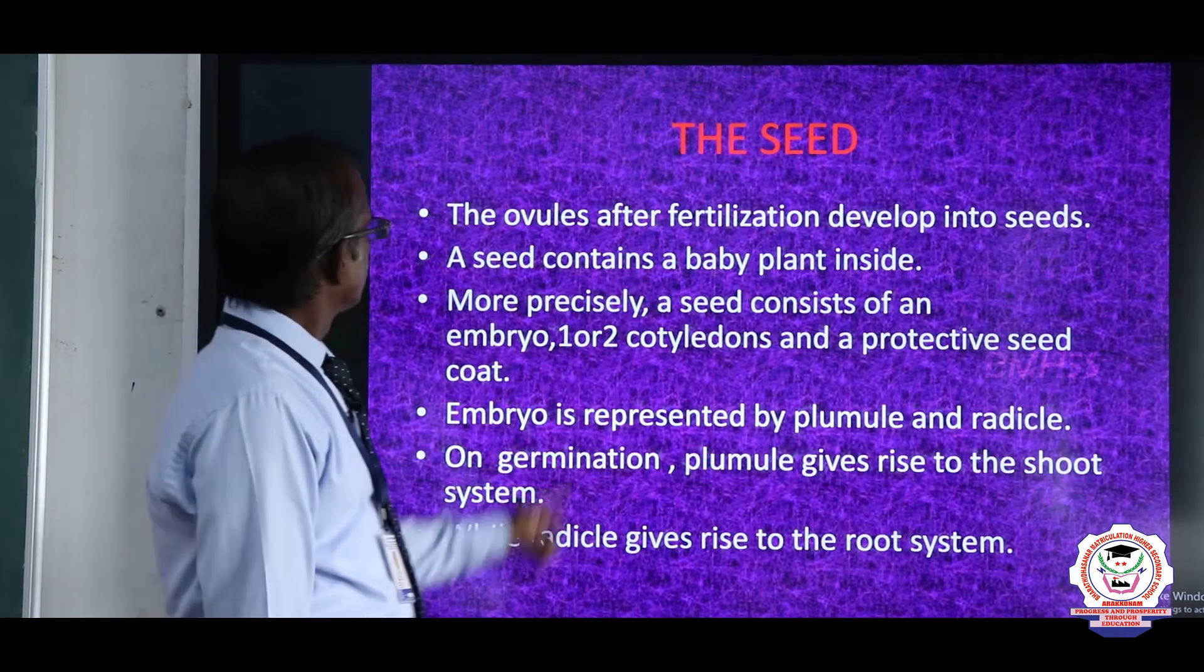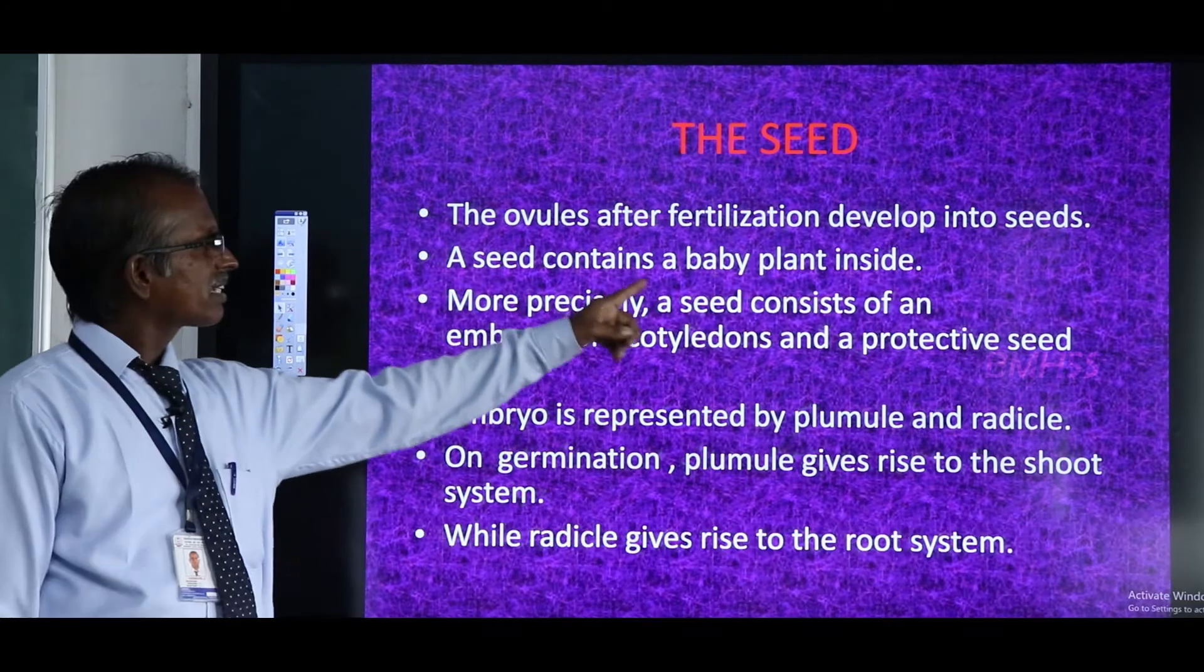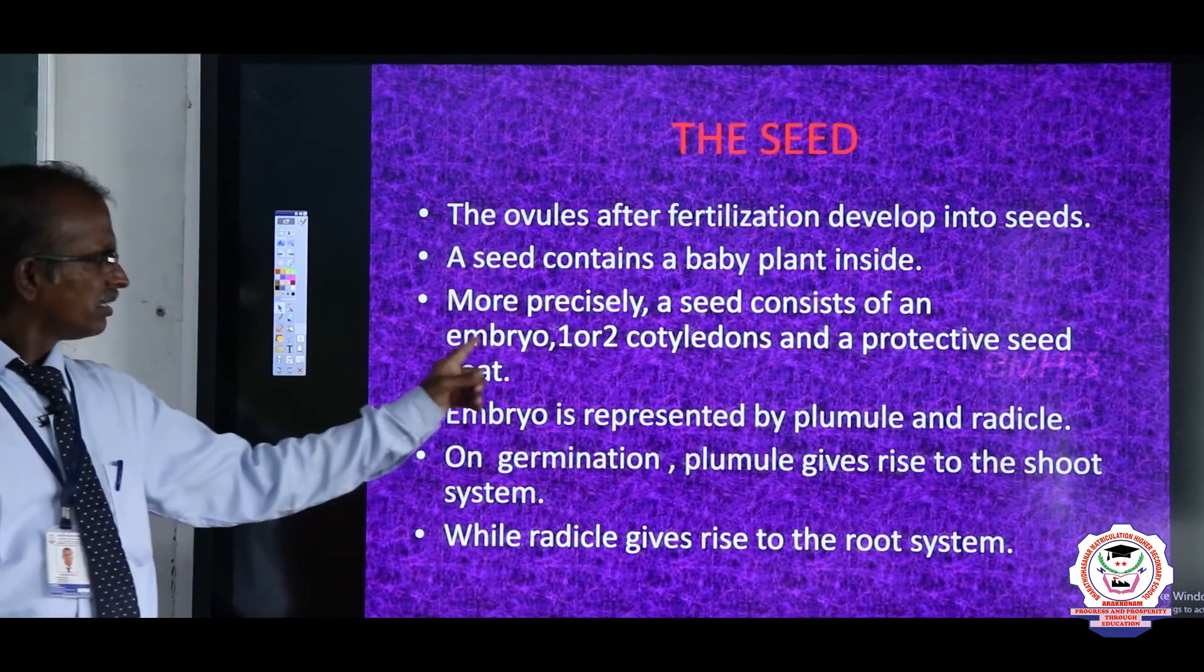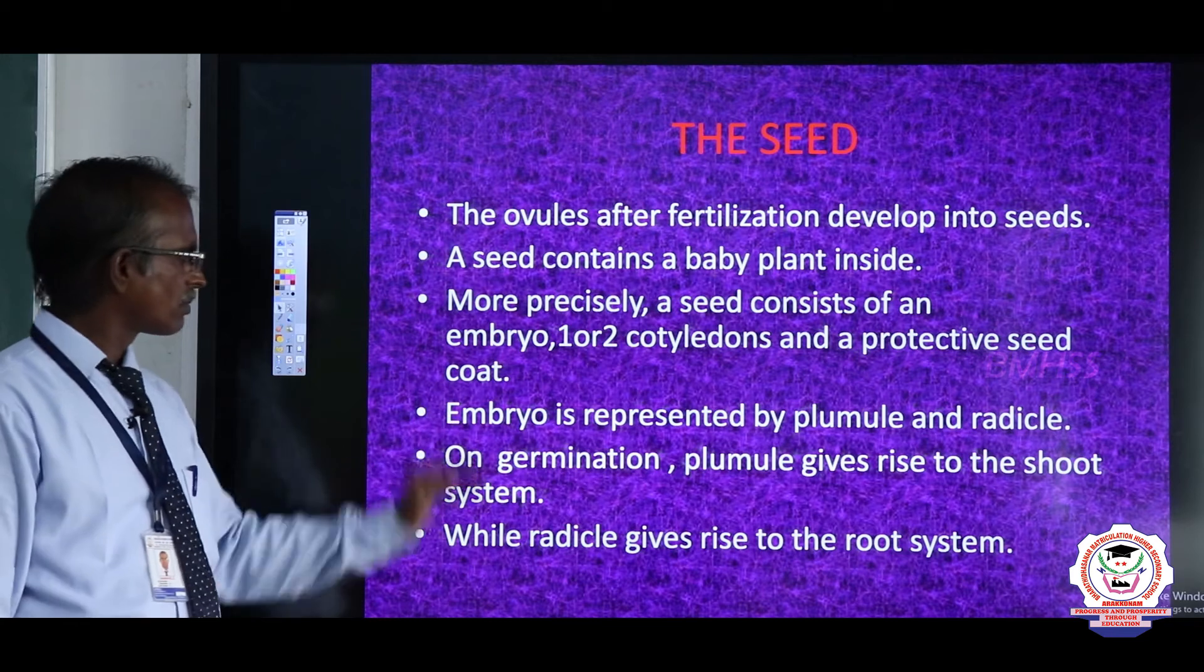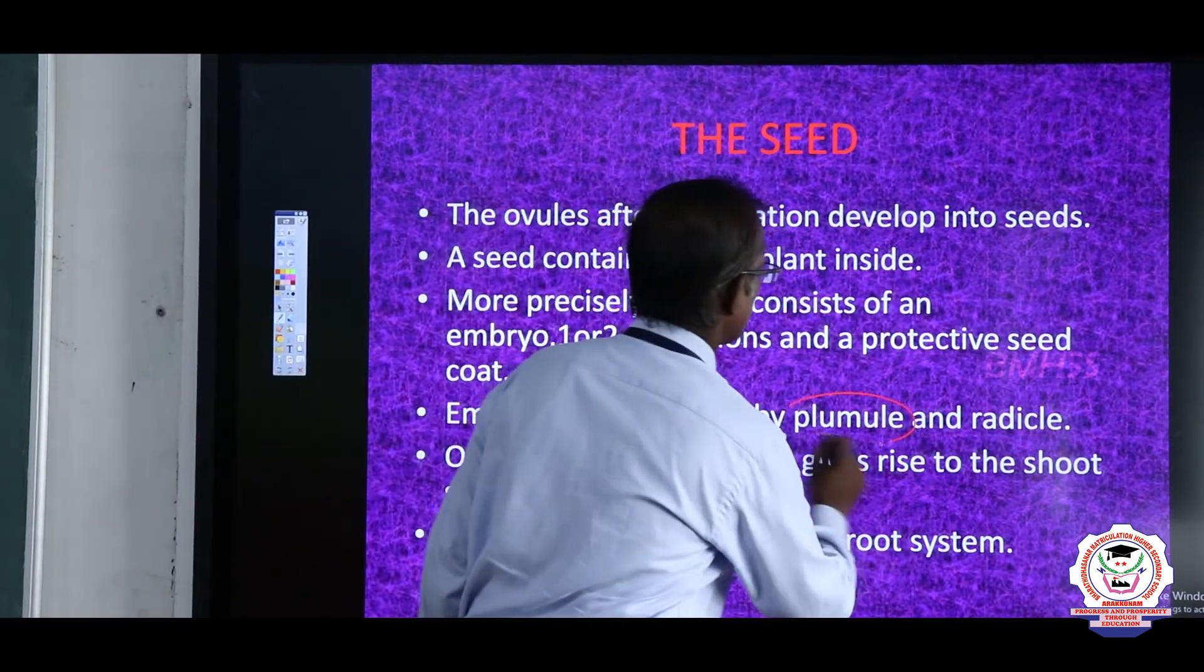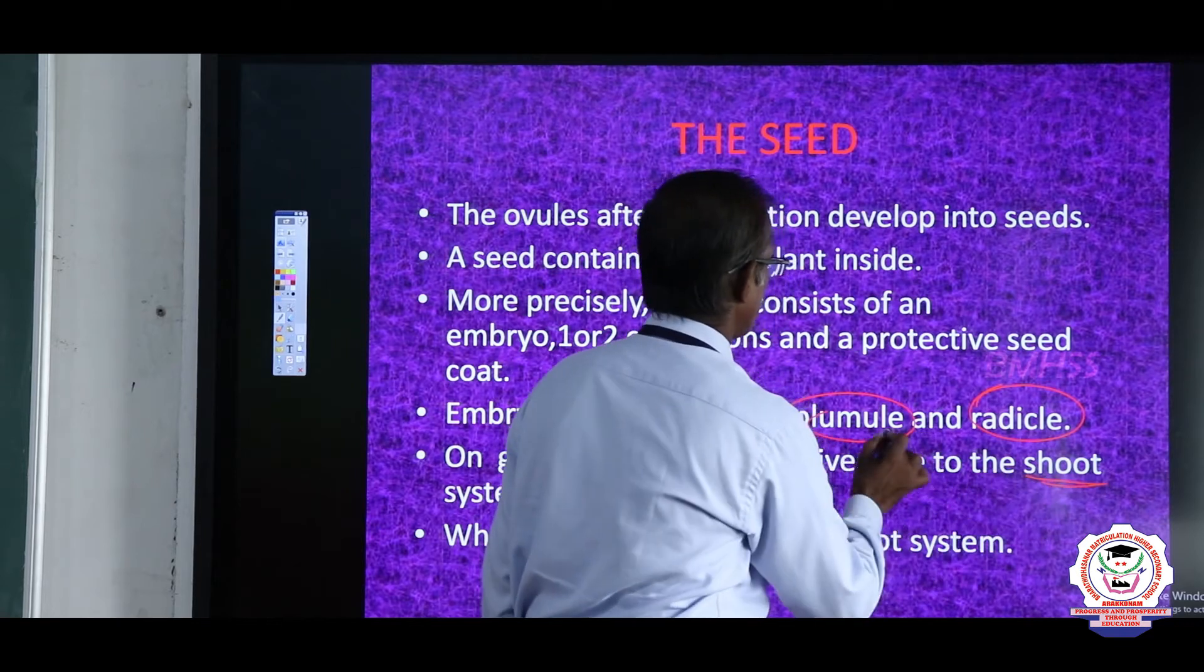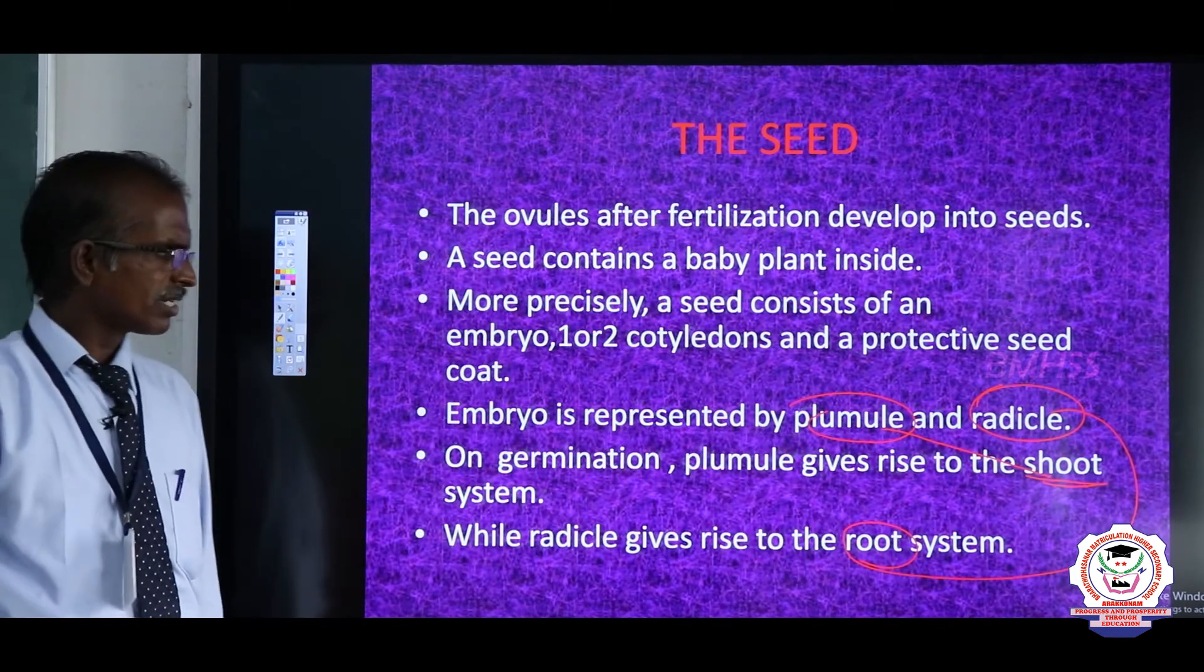The seed: The ovules after fertilization develop into the seed. A seed contains a baby plant inside. More precisely, a seed consists of an embryo, one or two cotyledons, and protective seed coat. Embryo is represented by plumule and radicle. On germination, the plumule gives rise to shoot system. Radicle gives rise to root system.